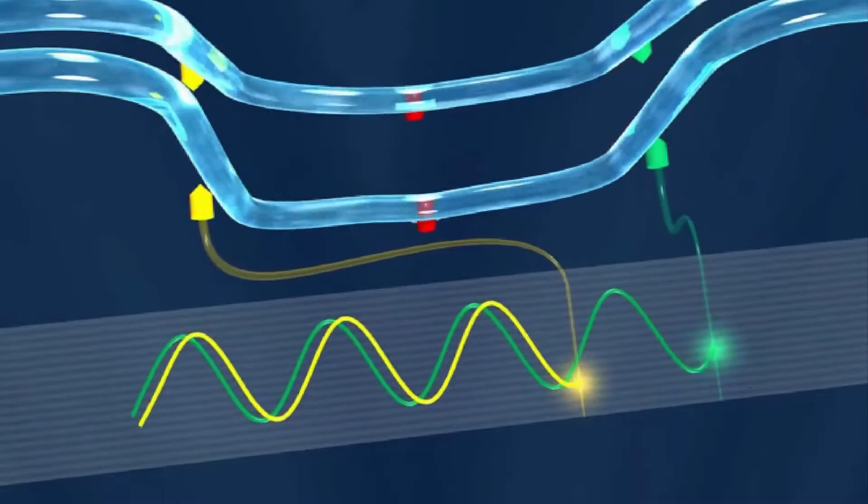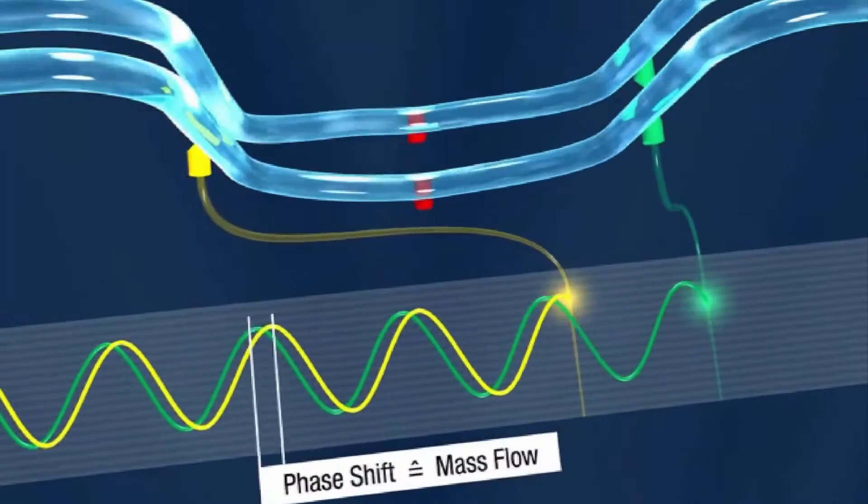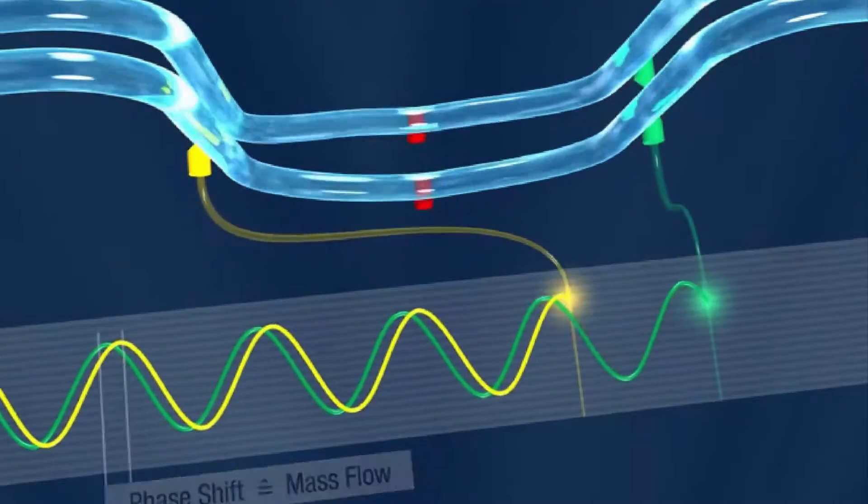A phase shift occurs between the first and the second sensor. The mass flow rate is derived from this phase difference.